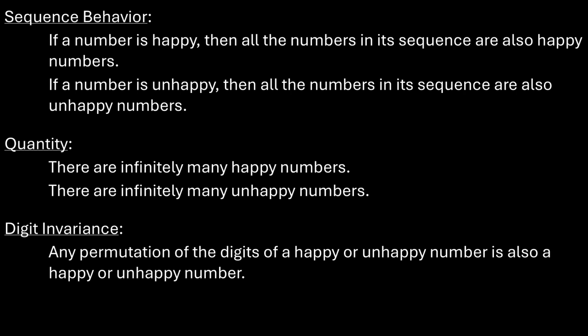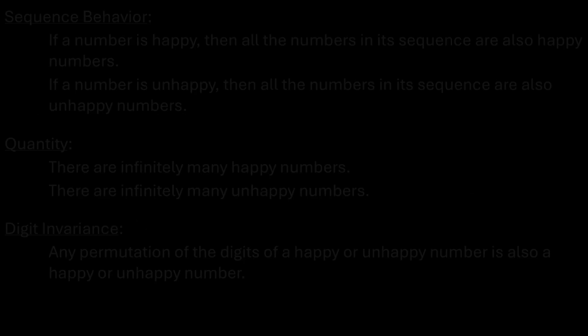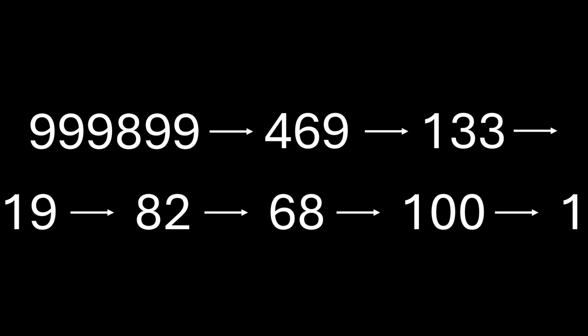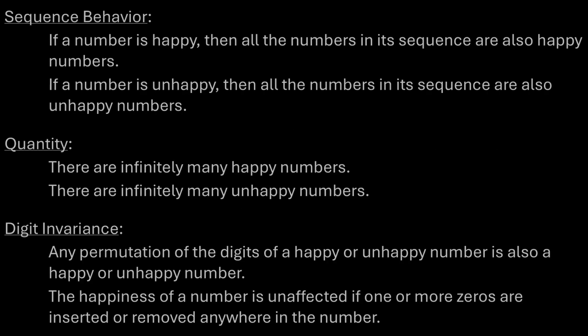We can permute the digits of a happy number or an unhappy number and it will remain happy or unhappy. A number will remain happy or unhappy no matter how many zeros we add or remove.